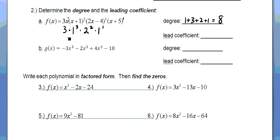So, I have 3 times 1 cubed is 1, times 2 squared is 4, times 1 to the first is just 1, so my leading coefficient is 12.